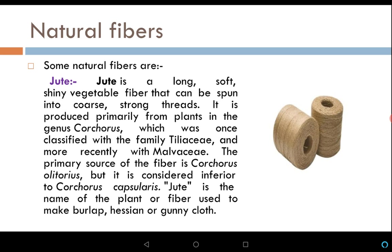Jute is a long, soft, shiny vegetable fiber that can be spun into coarse, strong threads. It is produced primarily from plants in the genus Corchorus, previously classified with the family Tiliaceae but more recently placed in Malvaceae — the same family as cotton. The primary source is Corchorus olitorius, though it is considered inferior to Corchorus capsularis. Jute is the name of both the plant and the fiber used to make burlap, hessian, or gunny cloth.